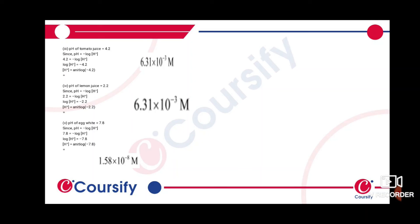The pH of lemon juice is 2.2. The hydrogen ion concentration is antilog of -2.2, which gives 6.31 × 10^-3 M.